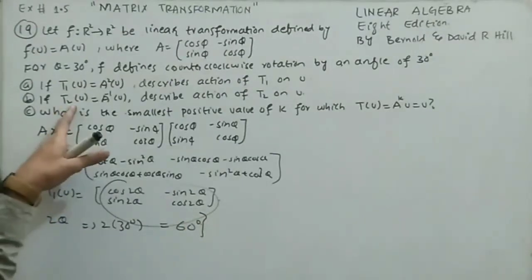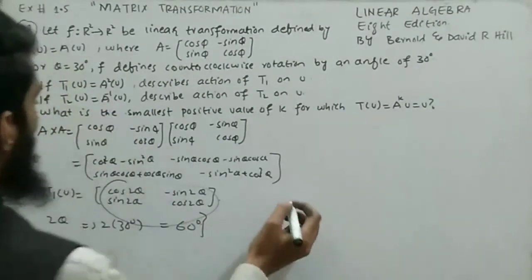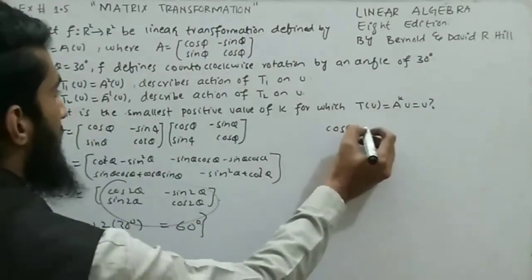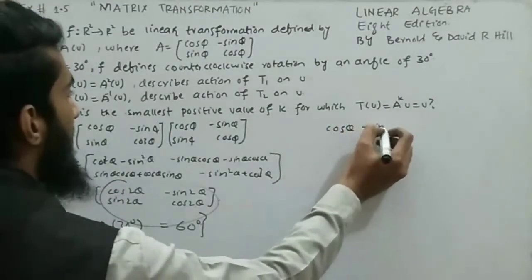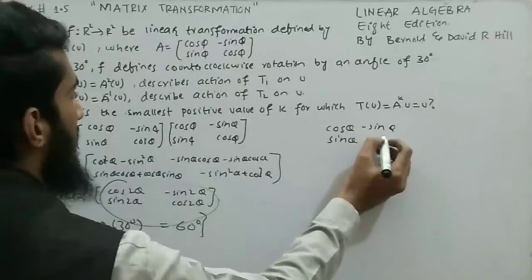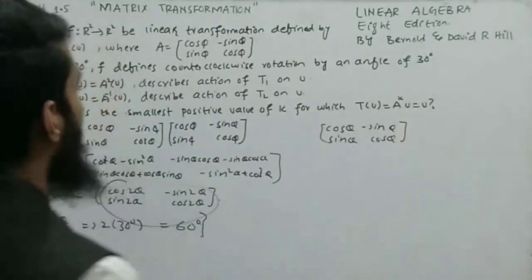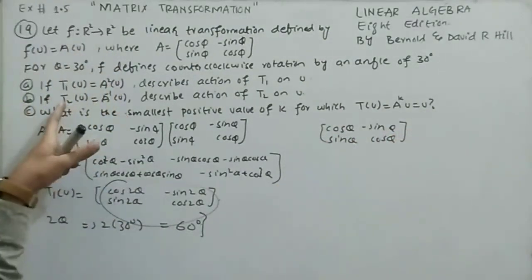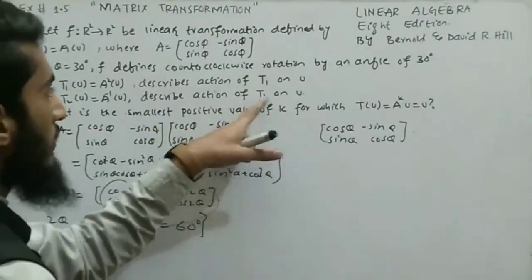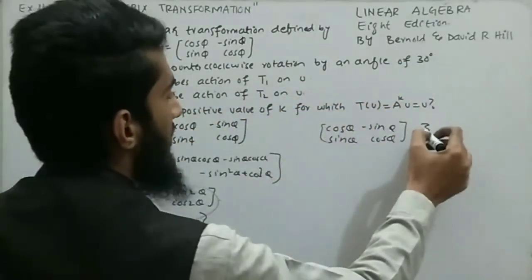For part two, t2(u) = A⁻¹u. The inverse of the rotation matrix A = [[cos φ,-sin φ],[sin φ,cos φ]] gives the same form of matrix. This means t2 describes a clockwise rotation (or rotation by -φ = -30°), which is the reverse of the original rotation. The action of t2 on u is a rotation by 30° in the clockwise direction.